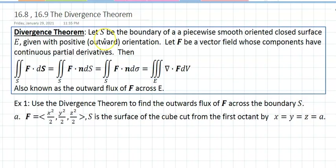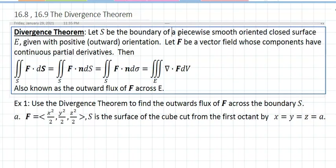Divergence Theorem says, let S be the boundary of a piecewise smooth-oriented closed surface E. E is the closed surface, and S is the boundary of that, given with positive outwards orientation. Then let F be a vector field whose components have continuous partial derivatives, at least the first derivative.